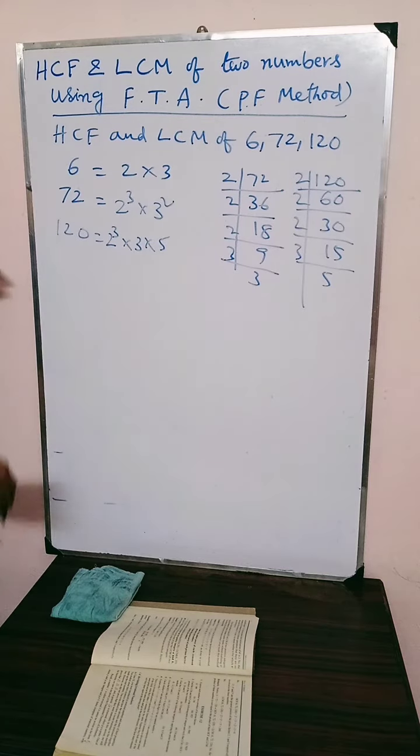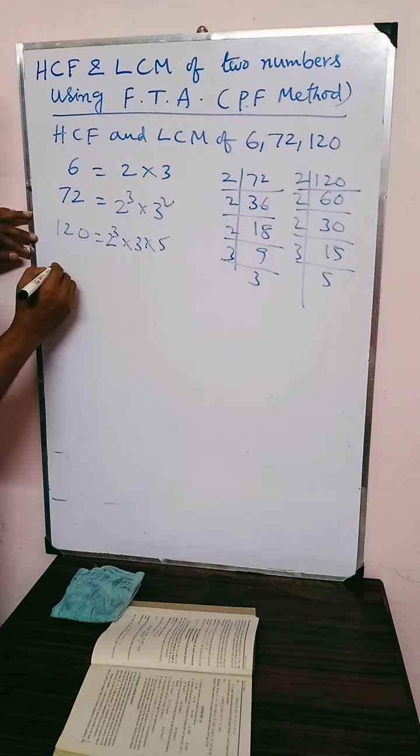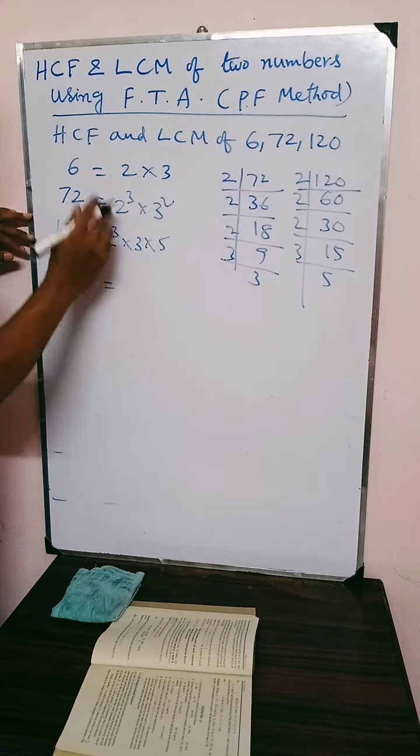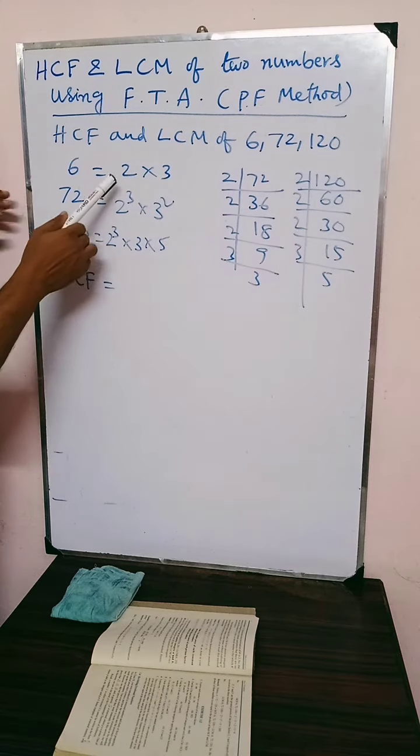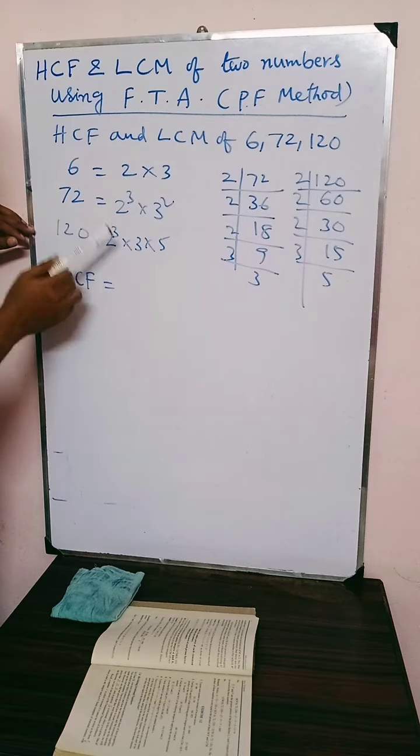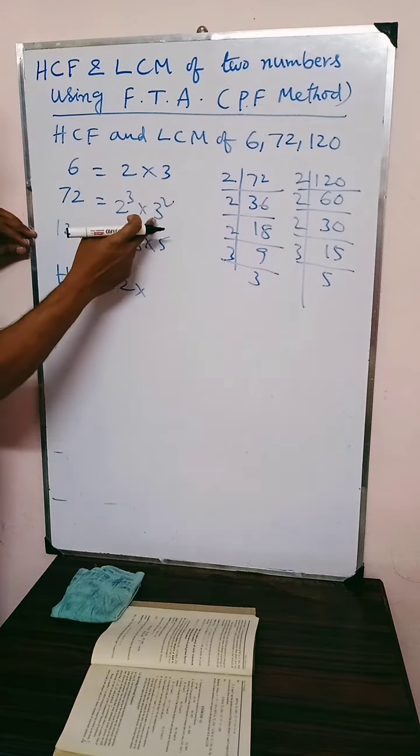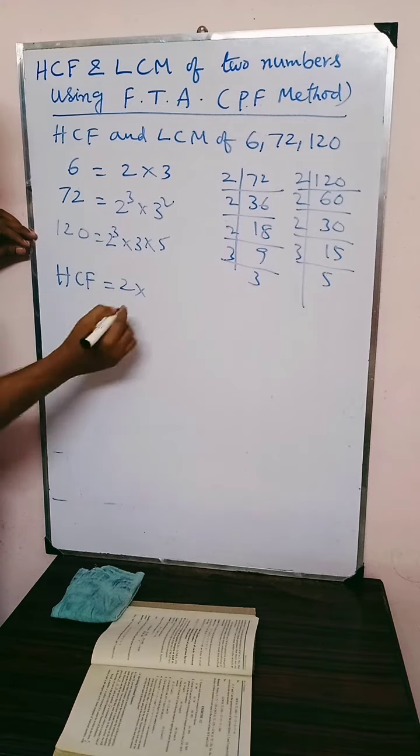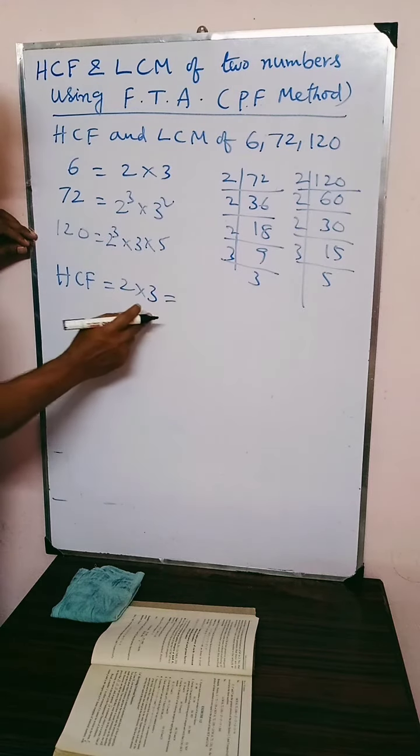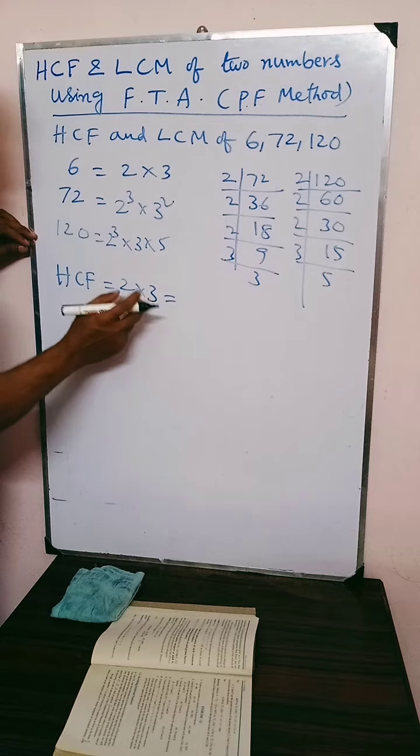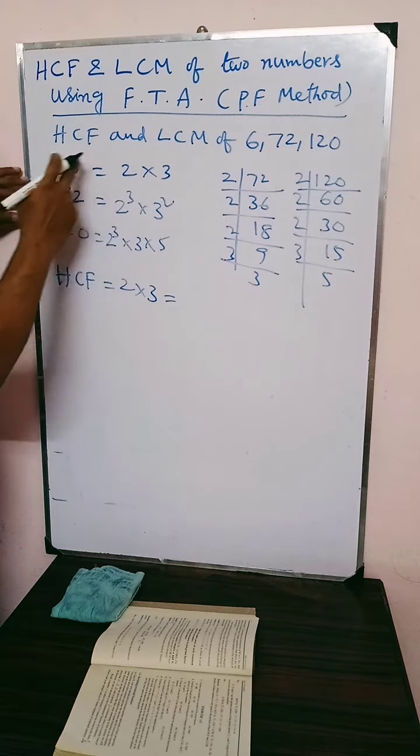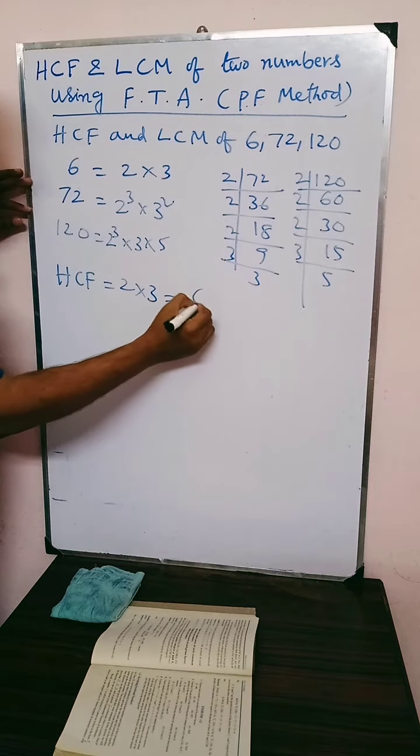Now when you take HCF, we only take the common factors in all the 3. Here you see 2 is a common factor. So 2 we take. And 3 is also a common factor in all the 3 numbers. So HCF is very simple. The common prime factors in all the 3 given numbers. That is 6.